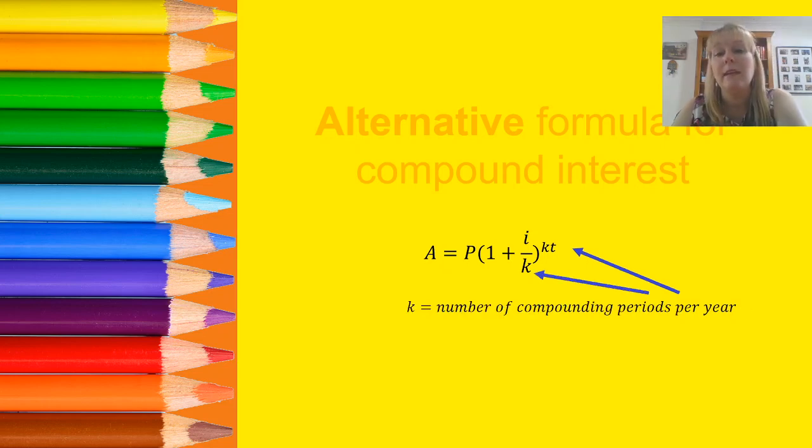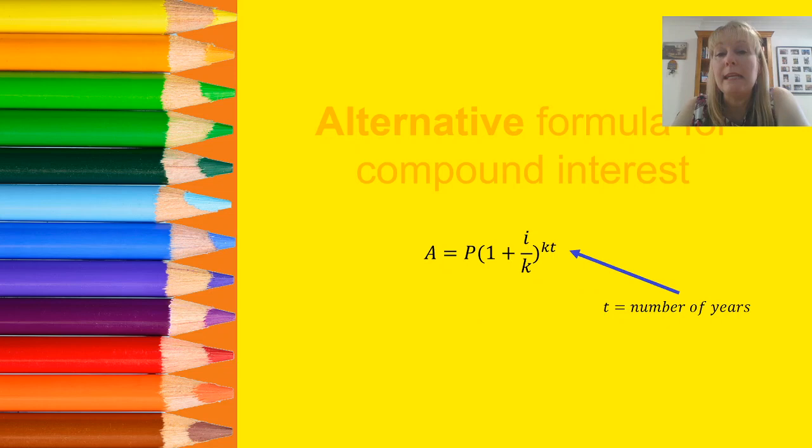K is our number of compounding periods per year. You can see that's on the denominator underneath i and it's also in our power. And t is our number of years. So in our power, we've got that compounding period per year multiplied by the number of years.